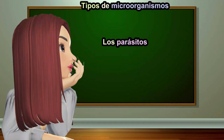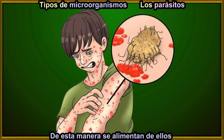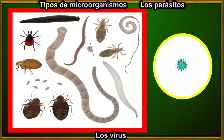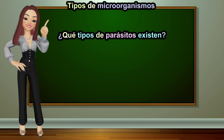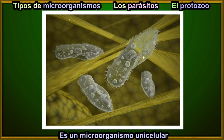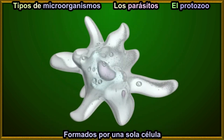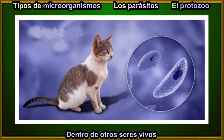Parasites are another type of microorganism. These parasites are microorganisms that live inside or on other living beings in order to feed on them. They can be larger than viruses, bacteria, and fungi. One type is the protozoan — a unicellular microorganism, which means they are composed of just a single cell. They can be found in various aquatic environments, in different types of soil, and inside other living beings, including humans.